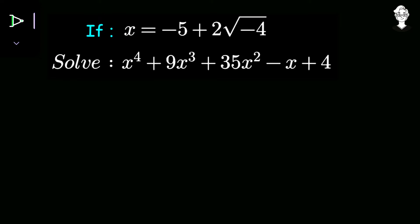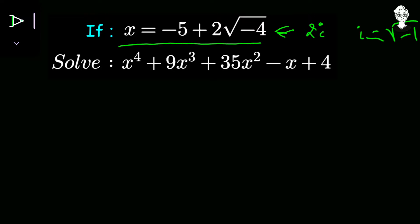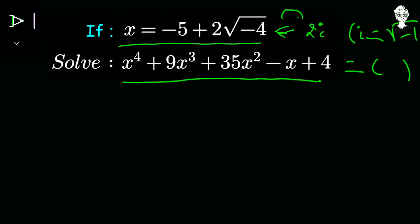Today we have a very easy and nice question from complex numbers. It says that the value of x is given as negative 5 plus 2 times square root of negative 4. The thing to be noted is that square root of negative 4 is nothing but 2 times iota, where i is the complex number that is square root of negative 1. So x equals negative 5 plus 2 times square root of negative 4, or equivalently 2 times 2 times iota. This value of x has to be put in the equation x to the power 4 plus 9x cubed plus 35x squared minus x plus 4, and we have to find the value of this equation.